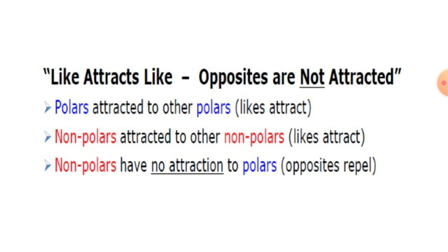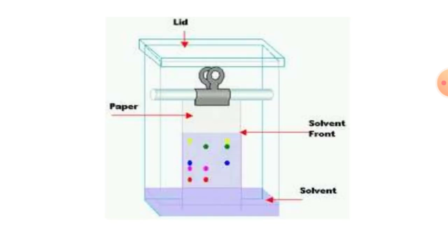Polar substances are attracted towards polar, and non-polar substances are attracted towards non-polar. Non-polar substances have no attraction to polar — that is, opposite types repel. In paper chromatography, you can see a solvent front and different colored spots on the paper strip, allowing you to separate substances using this technique.